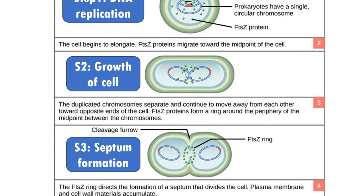Step two is elongation or growth of the cell. The cell grows in size or doubles in size, and the FtsZ protein migrates towards the midpoint. The two interlocked duplicated DNAs are unlocked by topoisomerase 2 by making double-stranded breaks. Then the duplicated genome moves to the opposite poles.